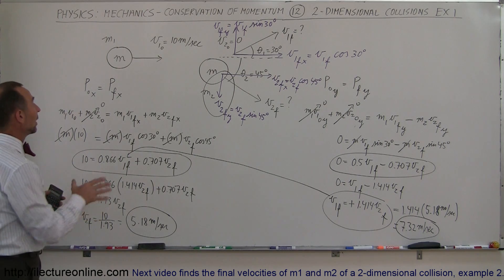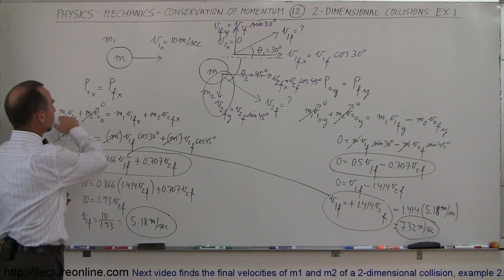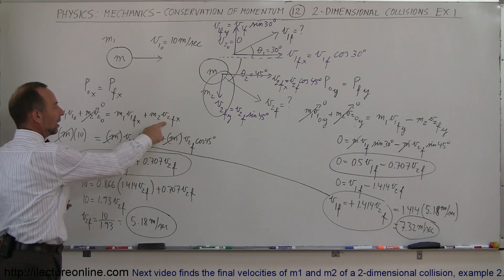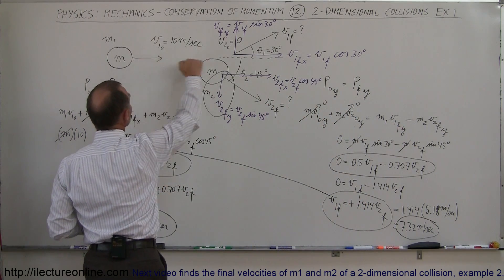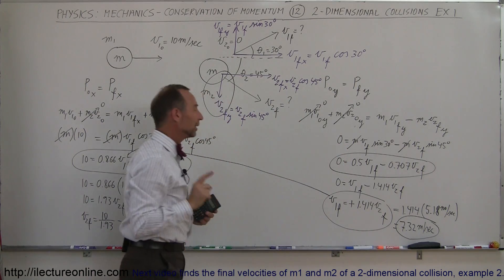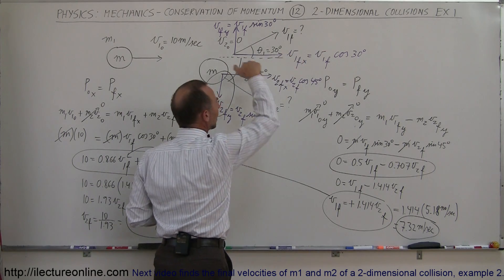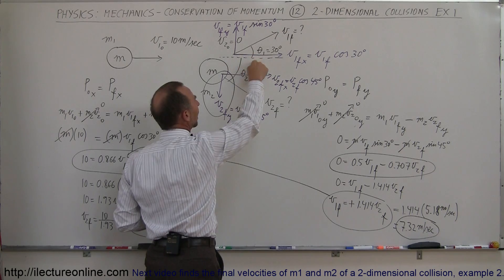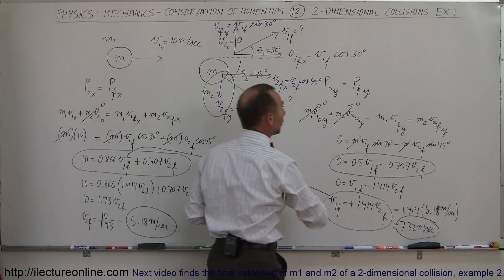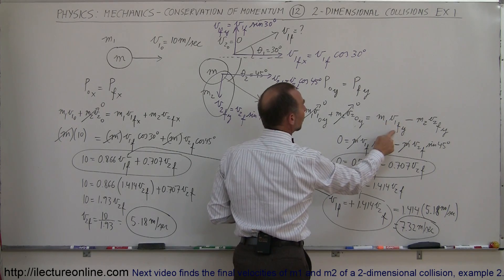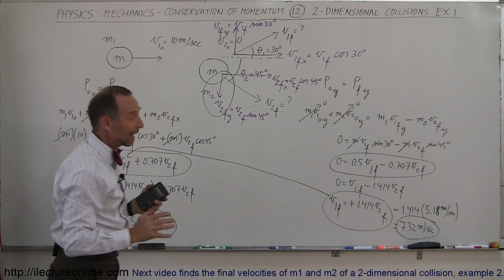To recap how we solved this problem: we write two conservation of momentum equations — one for the x direction and one for the y direction. In each equation, final velocities are broken into only their x or y components respectively. Since there was no initial momentum in the y direction, the left side of that equation is zero. After the collision, the y-component of mass 1 is positive and the y-component of mass 2 is negative, so you must include a negative sign there. That's how we solve this problem.